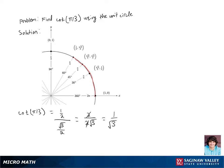We don't like having radicals in our denominator, so we're going to multiply by root three over root three, and our final answer will be root three over three.